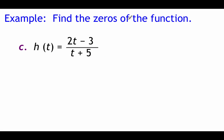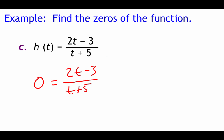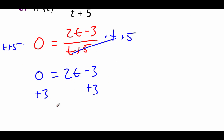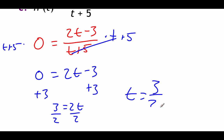Pause and try this one, or follow along. We have 0 = (2t - 3)/(t + 5). To clear the fraction, multiply both sides by (t + 5) — those cancel on the right, leaving 0 = 2t - 3. Add 3 over: 3 = 2t. Divide by 2: t = 3/2. You can graph that one to check your answer.